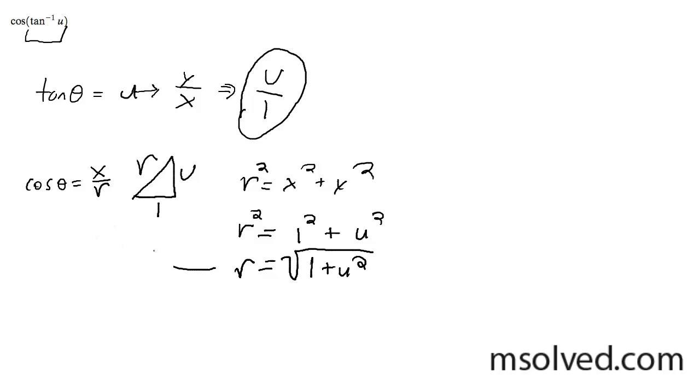So I have this here, so I can substitute this back in for r. And x is simply 1. So in this case, the solution to this answer is simply going to be 1 over the square root of 1 plus u squared.